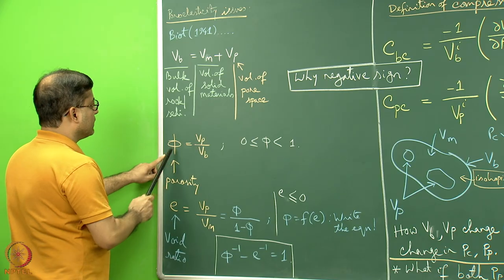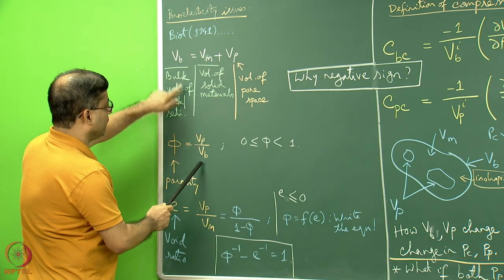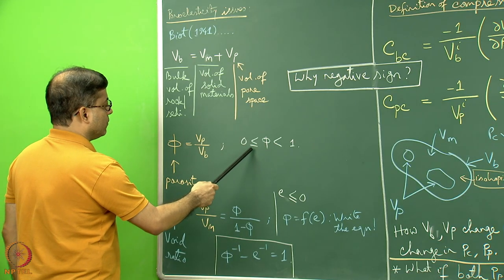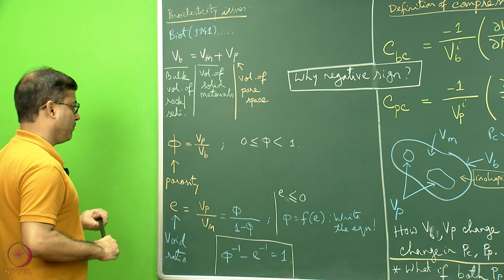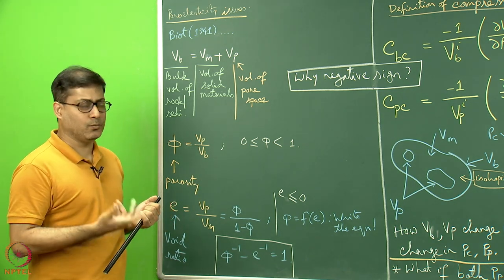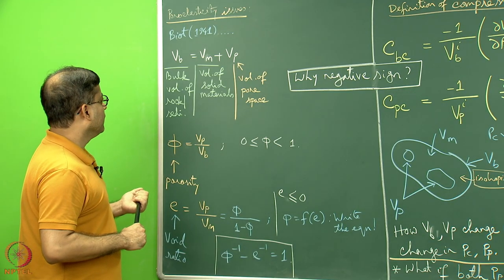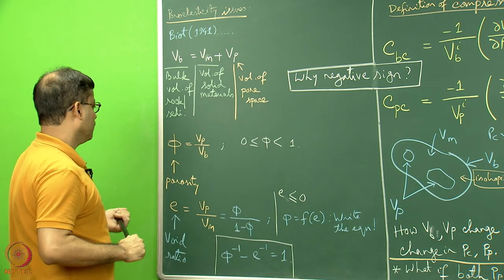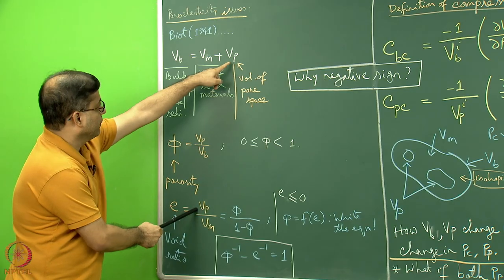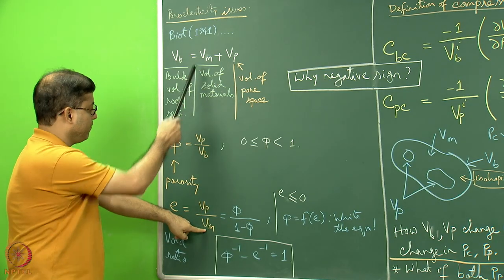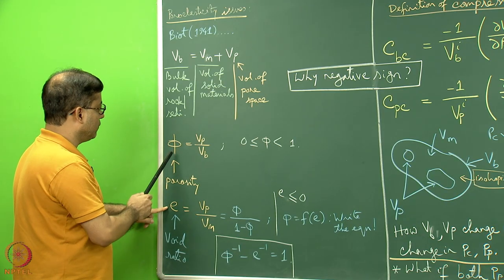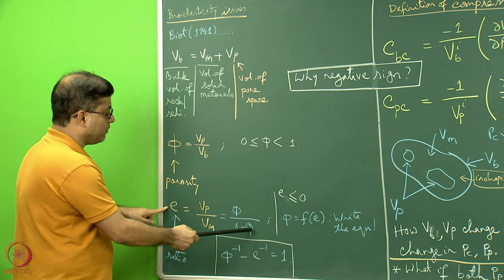Porosity can be defined as Vp divided by Vb, and porosity can vary from 0 to less than 1. Porosity equal to 0 means the rock is completely solid — there is no pore space available, meaning Vp equals 0. The void ratio can be defined as Vp divided by Vm, and we can find that the void ratio E equals phi divided by (1 minus phi).